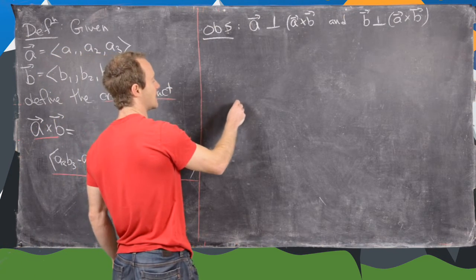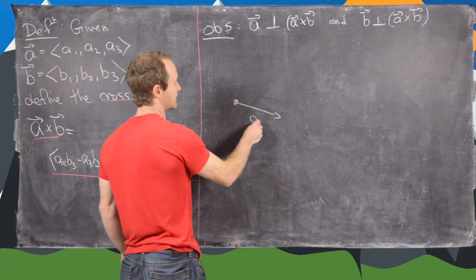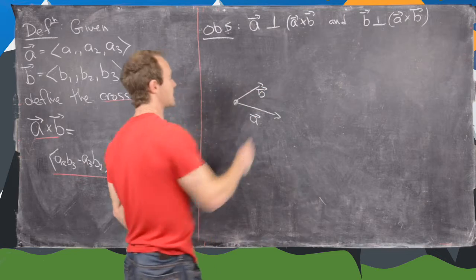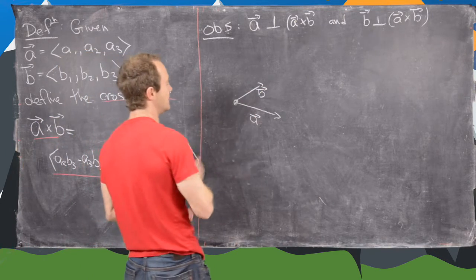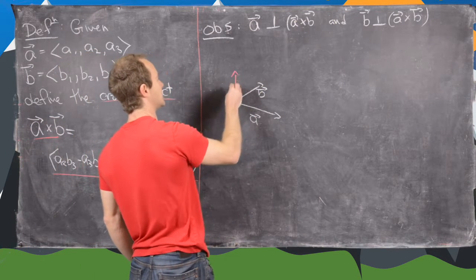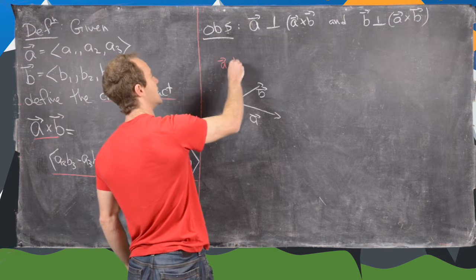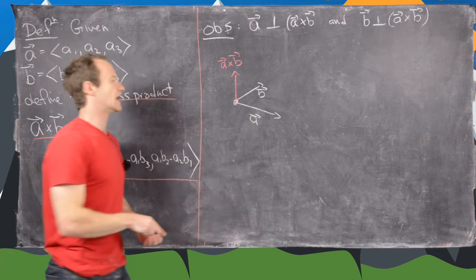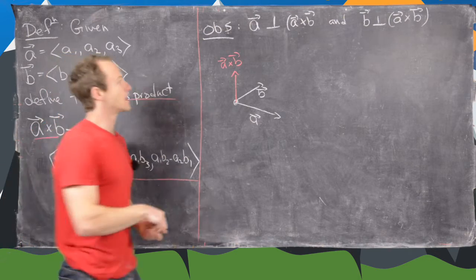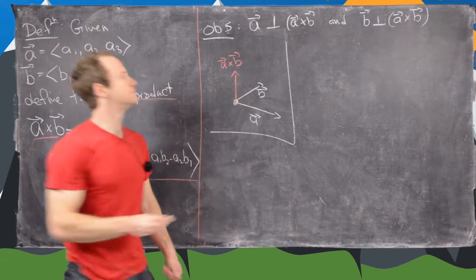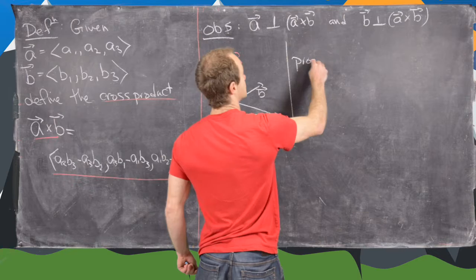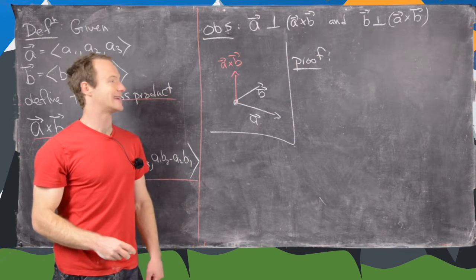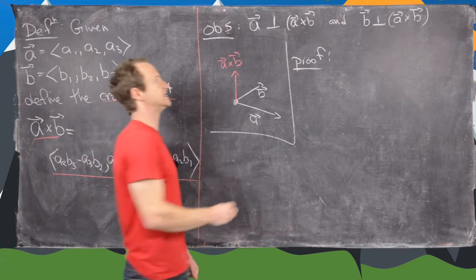Geometrically, if this is vector a and this is vector b, then the cross product produces a vector perpendicular to each. So a cross b is the vector where each of these angles measures 90 degrees. To prove this observation, we use the fact that two vectors are orthogonal exactly when their dot product equals zero.